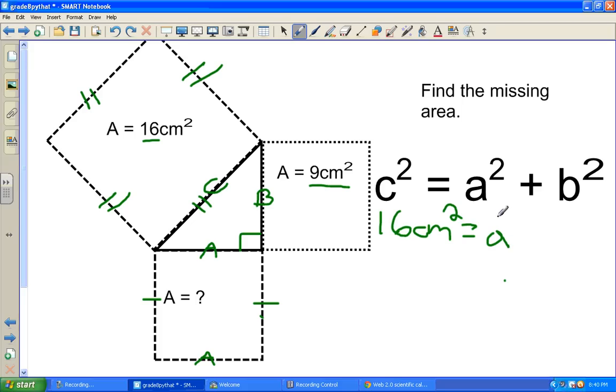So we're going to leave it A squared. And for B down here, we know that B squared will be 9 centimeters squared.